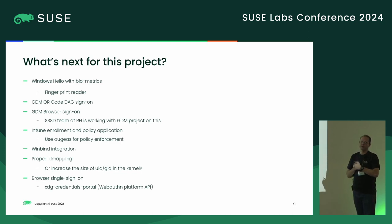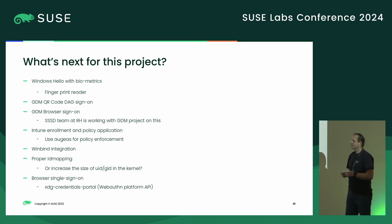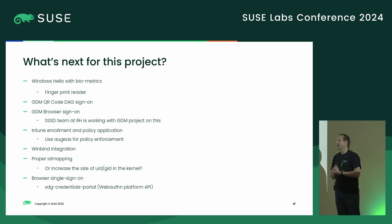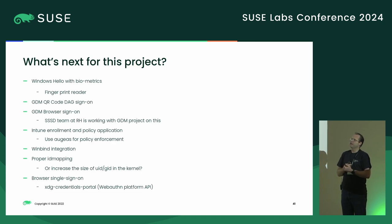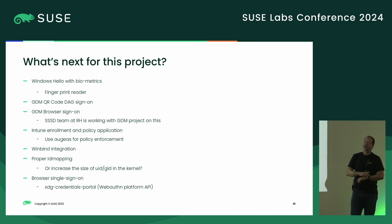The next steps: we want to get Windows Hello working with the fingerprint reader so a user can just walk up, swipe their fingerprint, and be logged in. We want to get a QR code for the DAG working in GDM — that is in progress, SSSD has been working on that. We want to get Intune enrollment and policy application working. Winbind integration is an important step — this is all meant to be a staging ground to learn how this works and get something to our customers in Tumbleweed, but the goal is to integrate it into Winbind. We need to do proper ID mapping — and something I wanted to bring up: can we increase the size of the UID and GID in the kernel, and how ugly would that be?